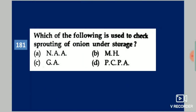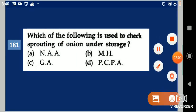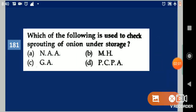Next question: Which of the following is used to check sprouting of onion under storage? Your options are: NAA, MH, GA, PCPA. Your answer is MH.